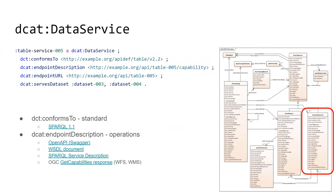The data service class represents an API. You can specify that it uses a standard such as SPARQL for SPARQL endpoints. The specification should have a URL. There is an endpoint description, which can be human-readable or machine-readable — for instance, some geo-services offer a machine-readable representation of their capabilities. There is also an endpoint URL — the URL you send requests to — and finally a link to the dataset being served by the service.